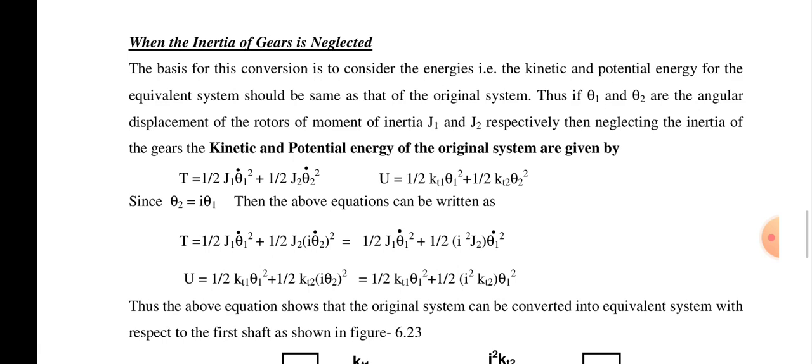Since θ2 = i·θ1, the equations can be rewritten. Kinetic energy becomes T = (1/2)J1·θ̇1² + (1/2)i²·J2·θ̇1². Potential energy becomes U = (1/2)kt1·θ1² + (1/2)i²·kt2·θ1². This simplification combines the inertia and stiffness terms by multiplying the second shaft quantities by i².